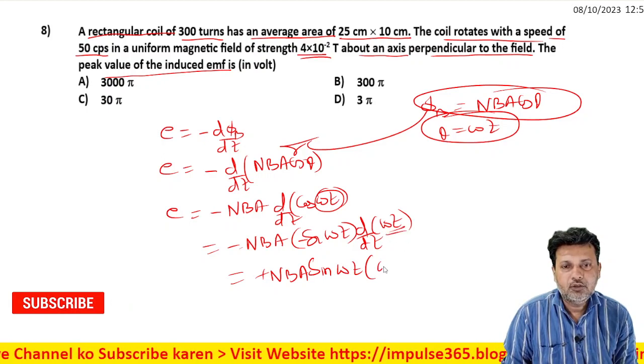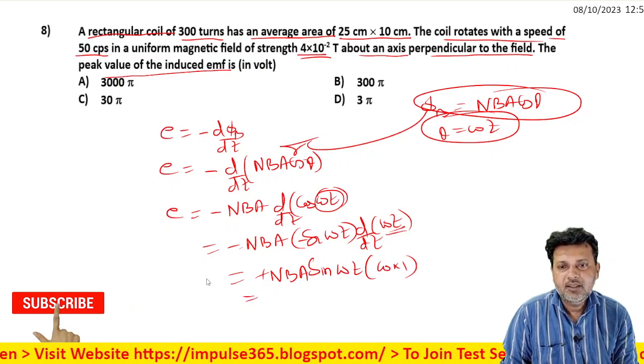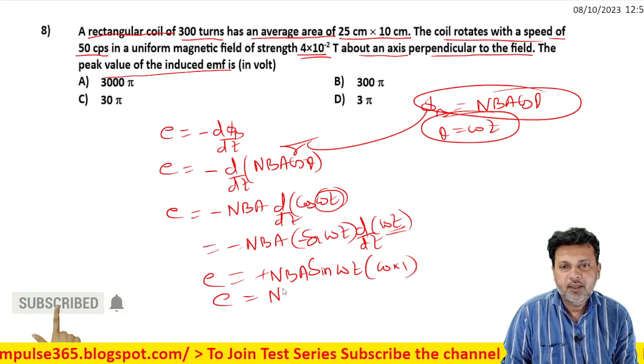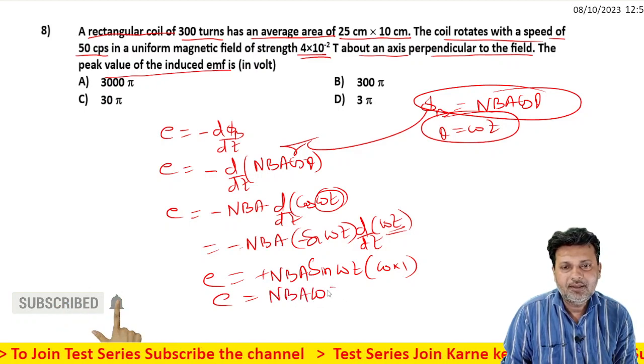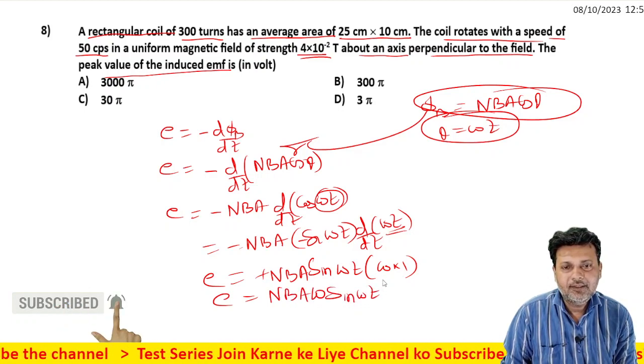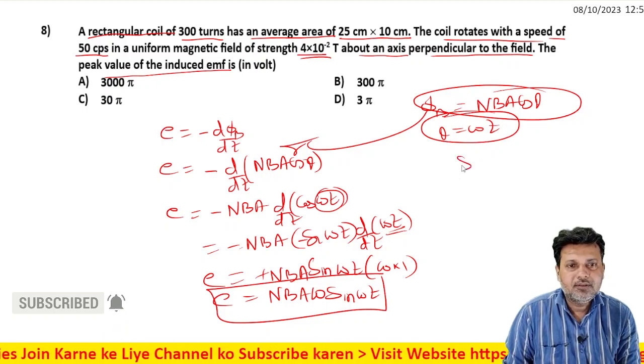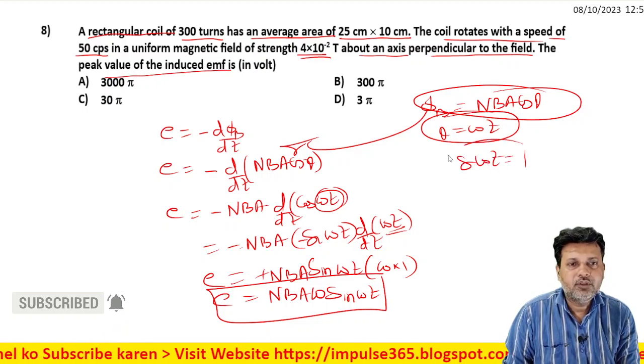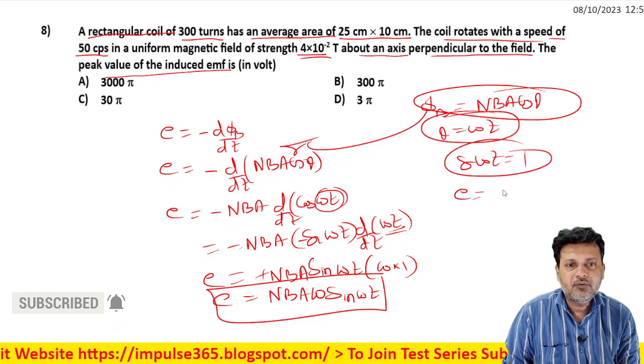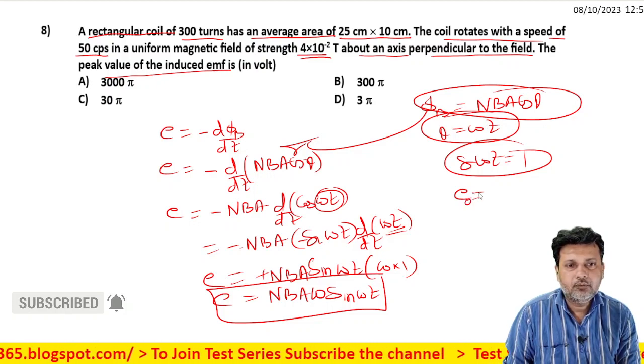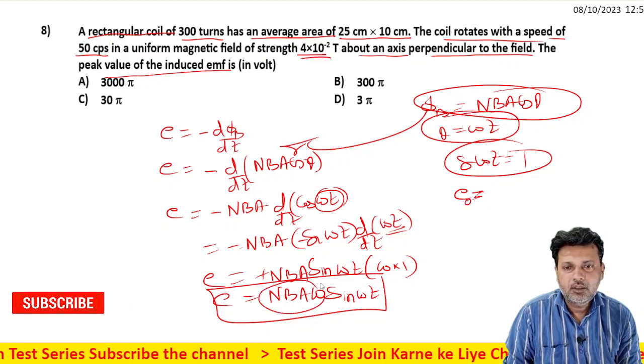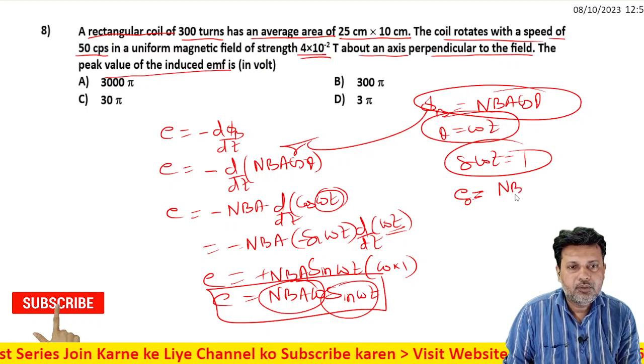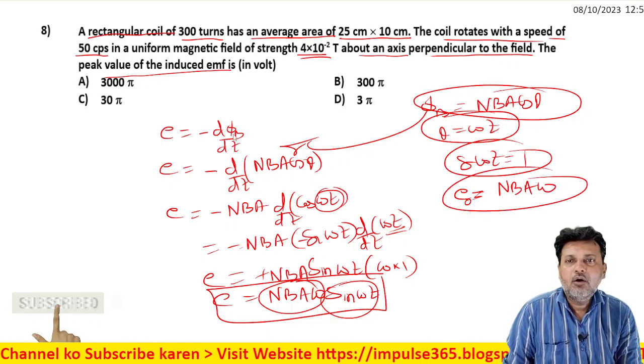So e = NBAω sinωt. The maximum value of sinωt is 1, therefore the peak value of EMF is e₀ = NBAω. This is the peak value or maximum value.